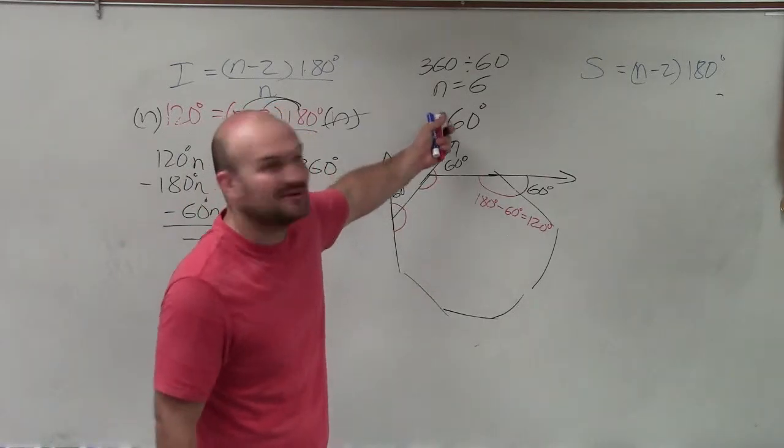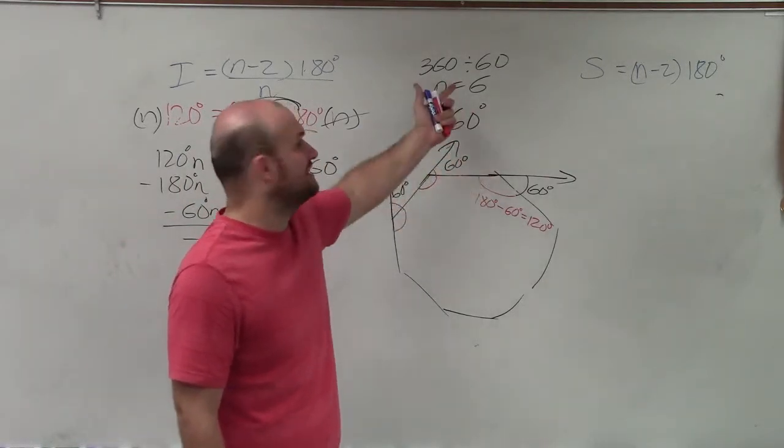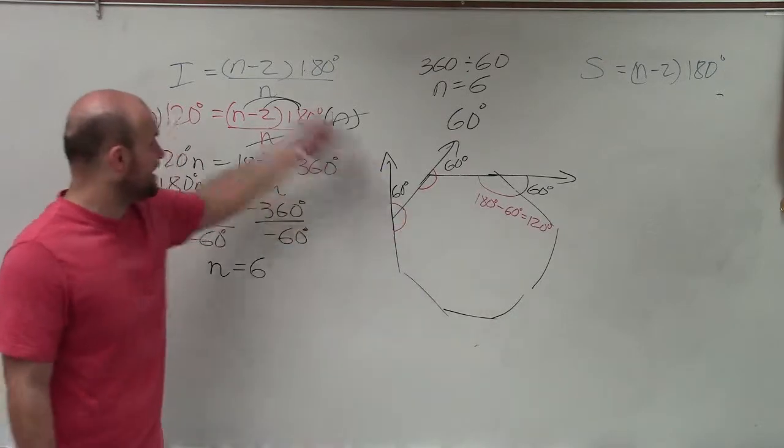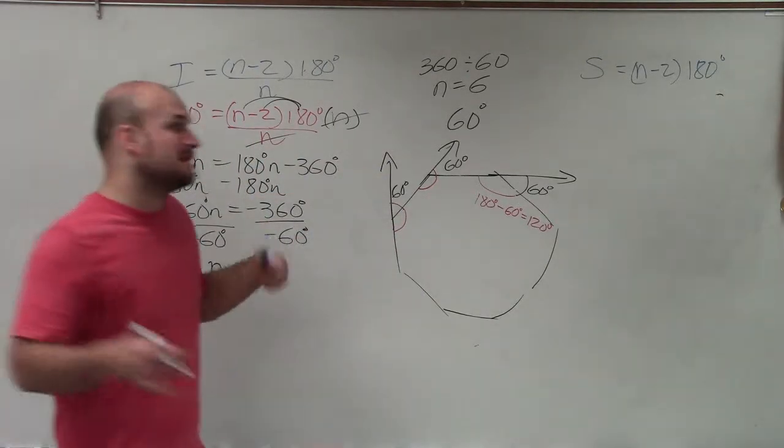So that is much easier. Just take your one exterior angle, divide it into 360. It's much quicker than finding the interior angle and using this formula, however they both work.